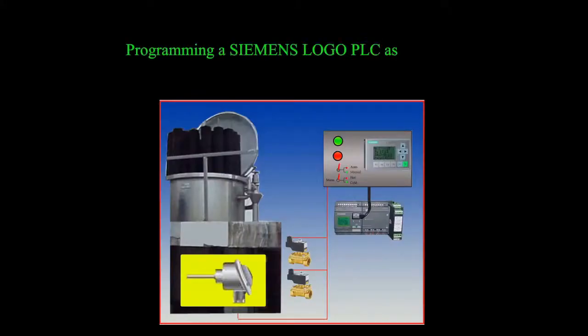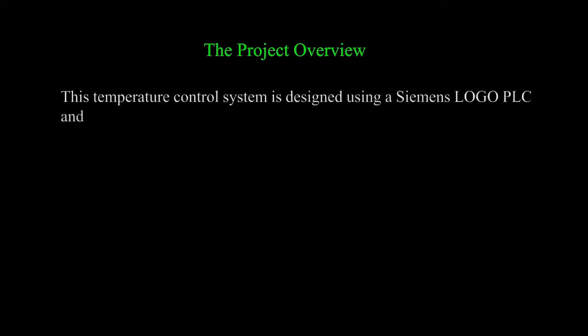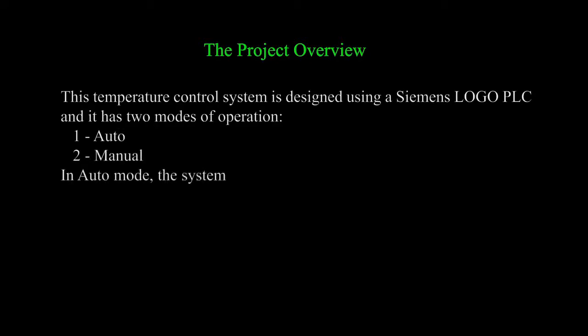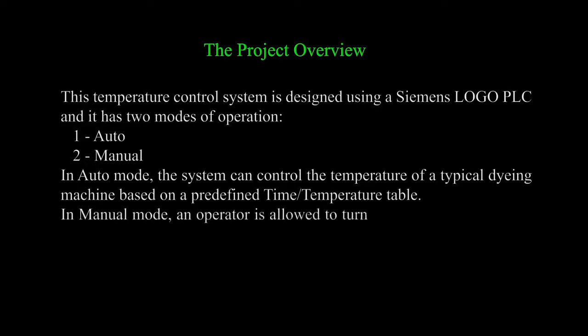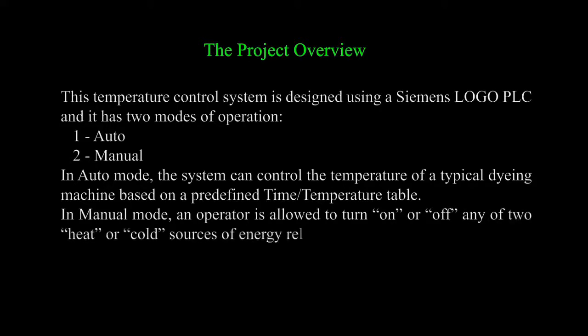Programming a Siemens LOGO PLC as a dyeing machine temperature controller. This temperature control system is designed using a Siemens LOGO PLC and has two modes of operation: auto and manual. In auto mode, the system controls the temperature of a typical dyeing machine based on a predefined time-temperature table. In manual mode, an operator can turn on or off either of the two heat or cold source relays independently.